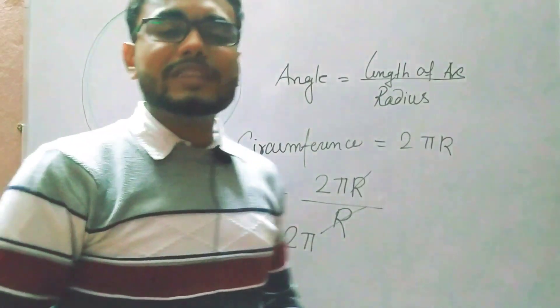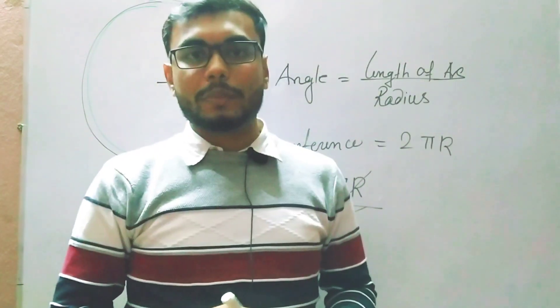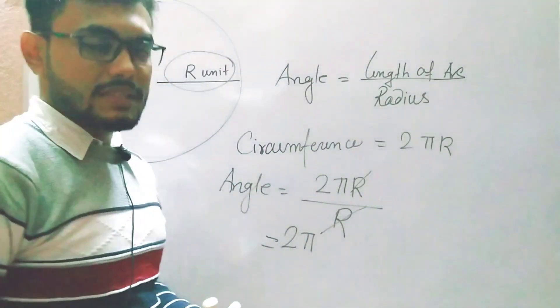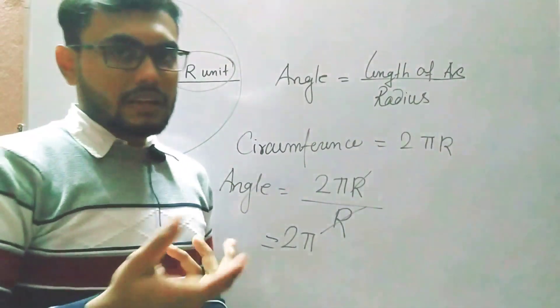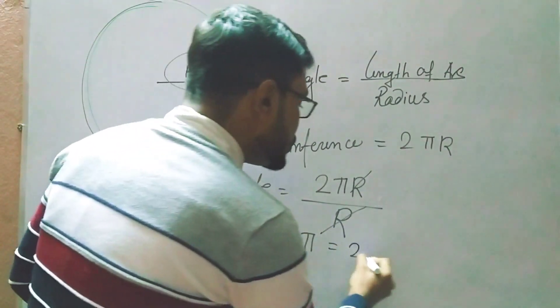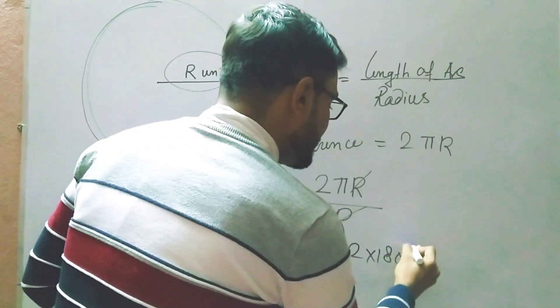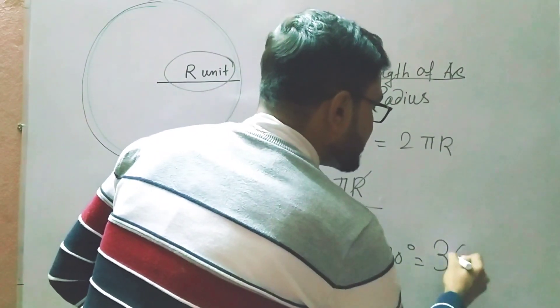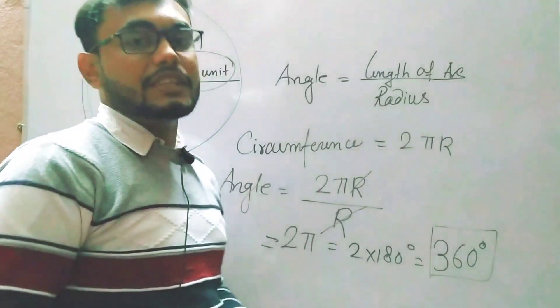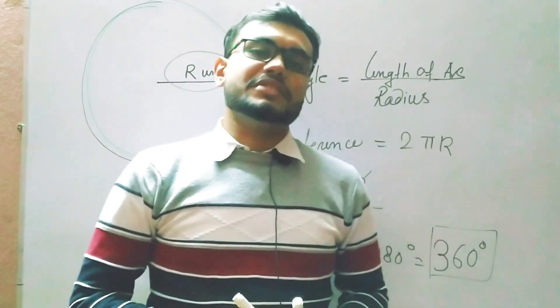We know in angular measurement, the value of π is 180 degrees. We're not taking π as 22/7 because we are not dealing with mensuration here. So it becomes 2 times 180 degrees, which equals 360 degrees. And this is the reason that the total angle of a circle is 360 degrees.